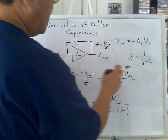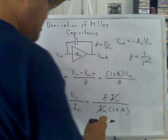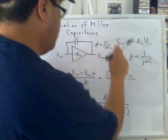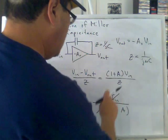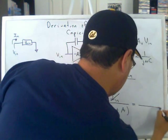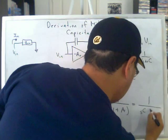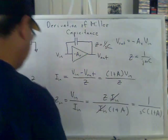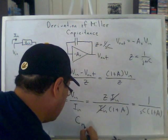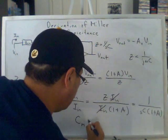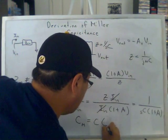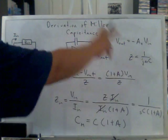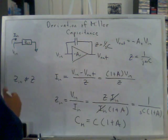If we substitute this feedback impedance in here, we get the Miller capacitance: C times 1 plus A. And this is how you derive Miller capacitance.